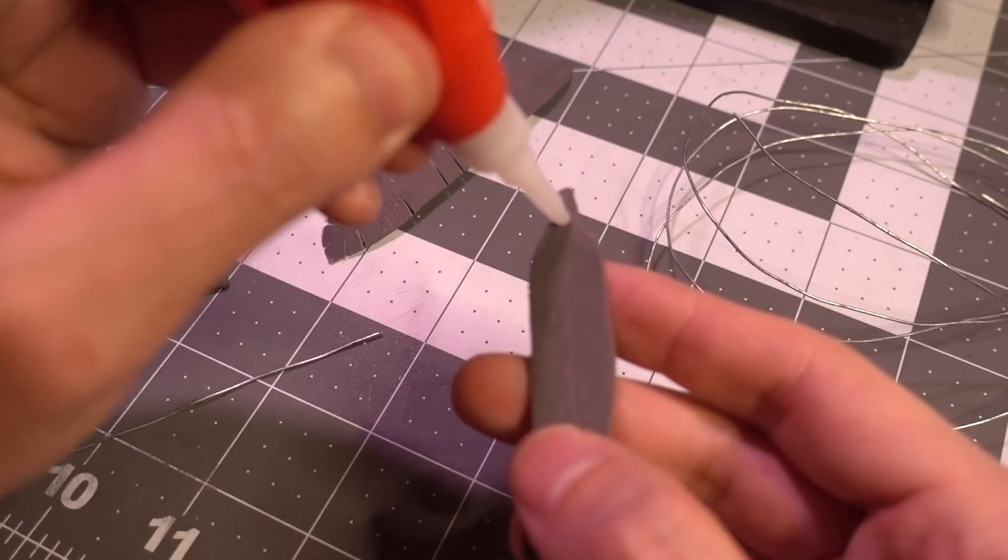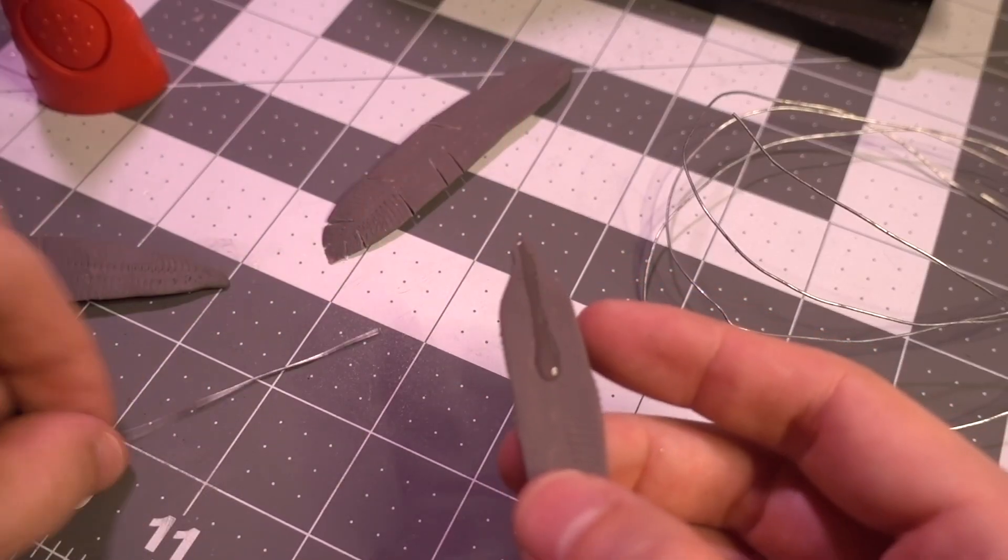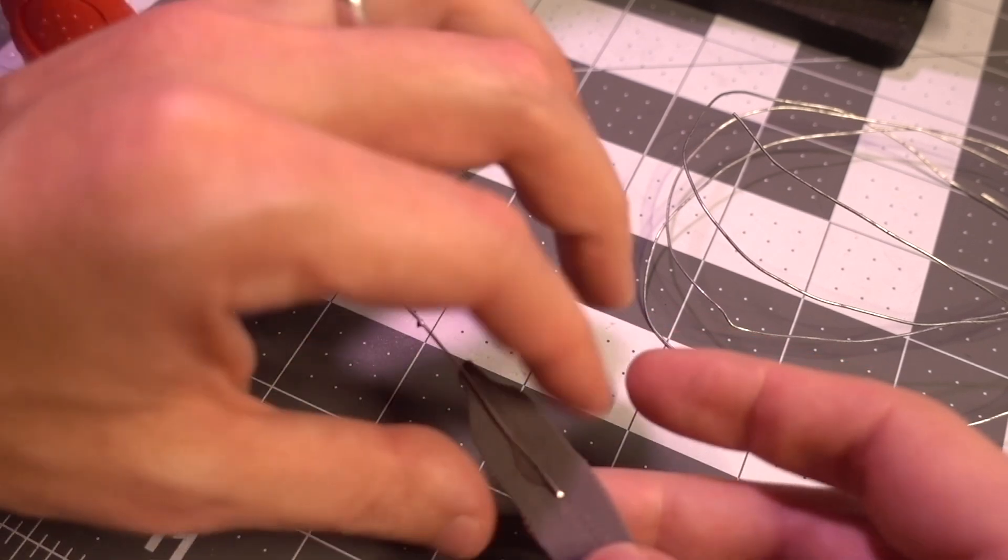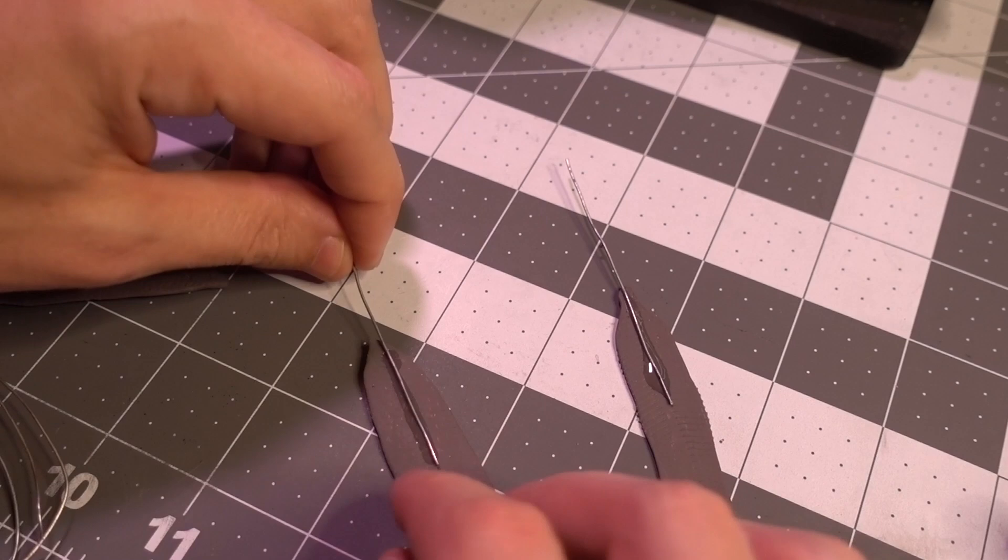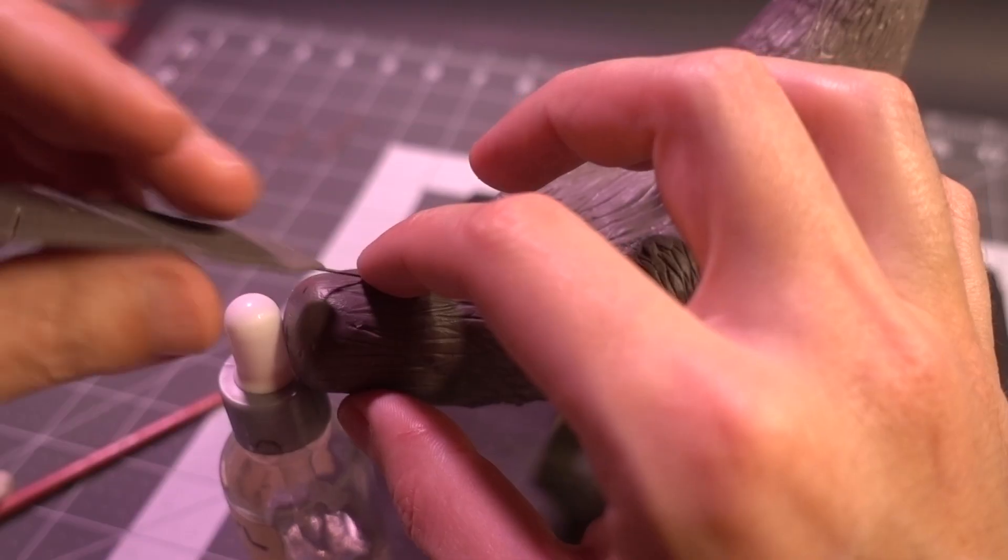Inserting the feathers was a real fun time. The bird's body was still soft at this point, while the feathers were baked and hard, so to get them to stick, I ended up attaching bits of wire to the undersides of the feathers, then poking them in one by one.